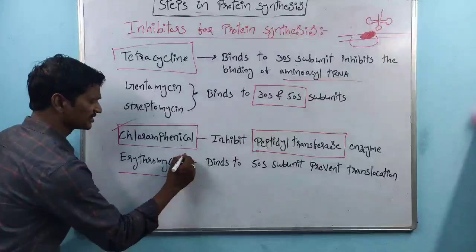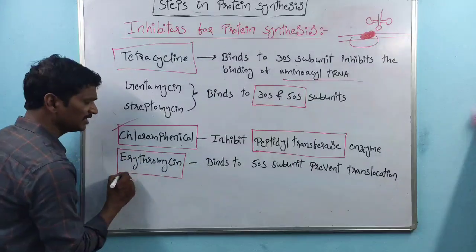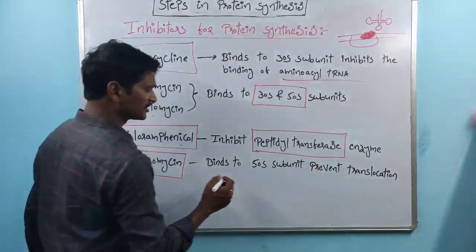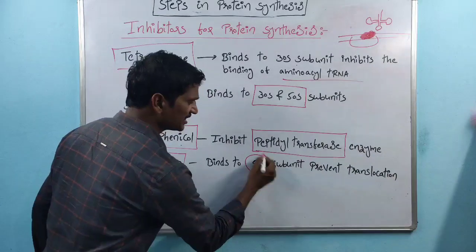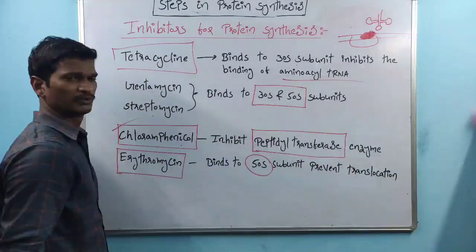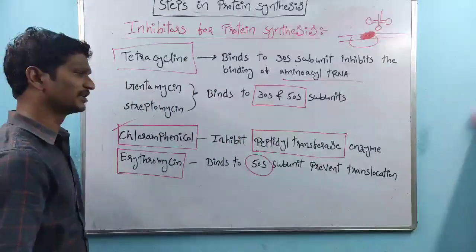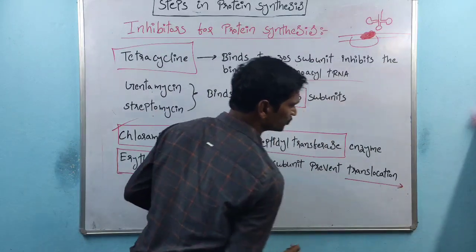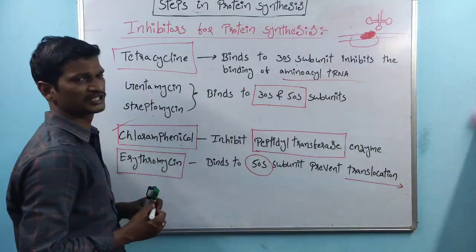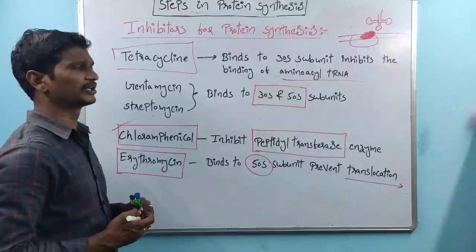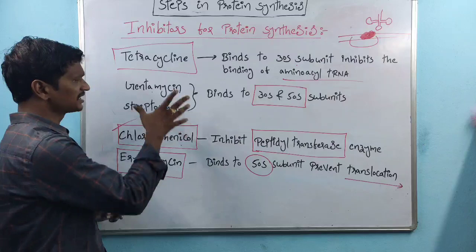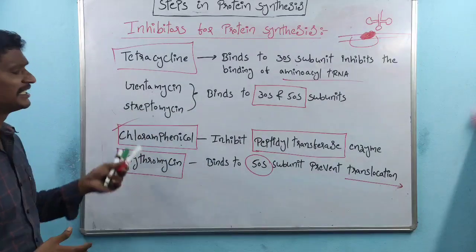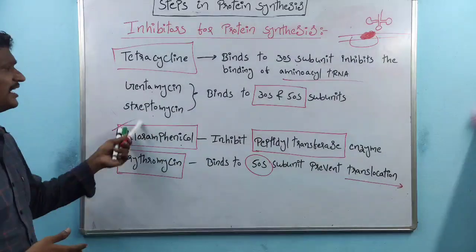Erythromycin binds to the 50S subunit and prevents the translocation of ribosomes. These are the different types of antibiotics that act as inhibitors of protein synthesis.